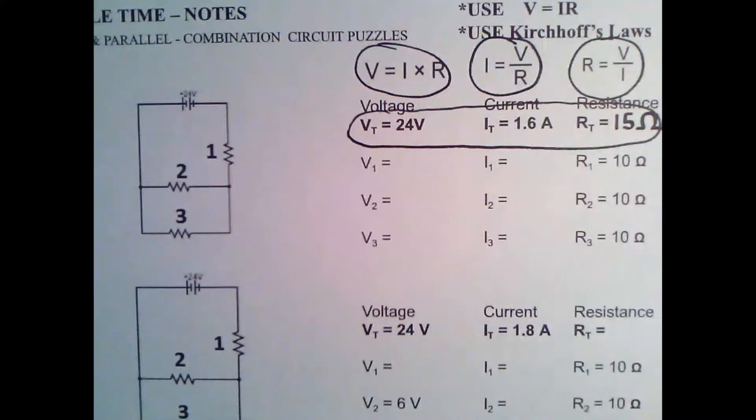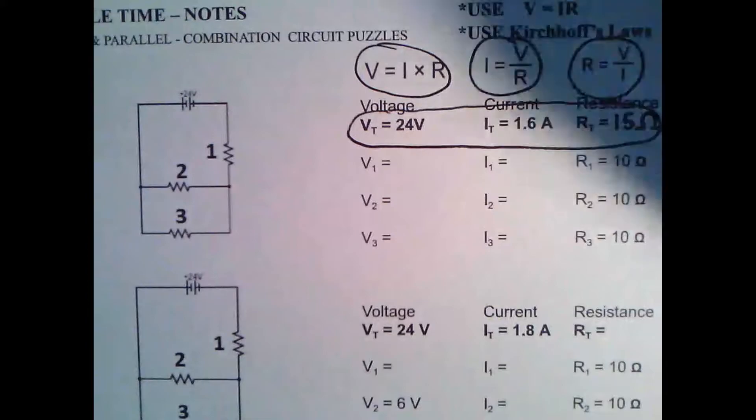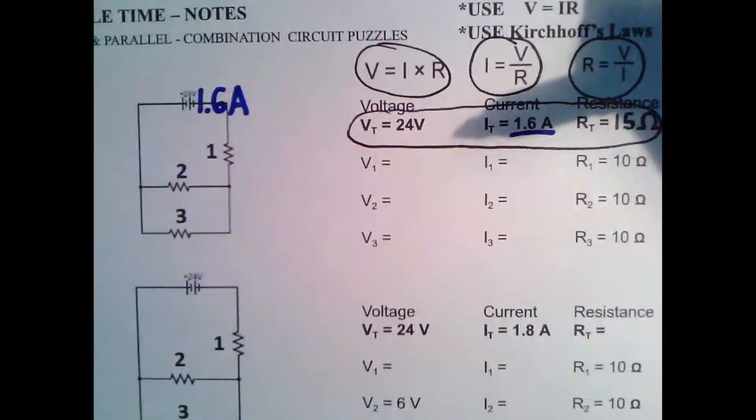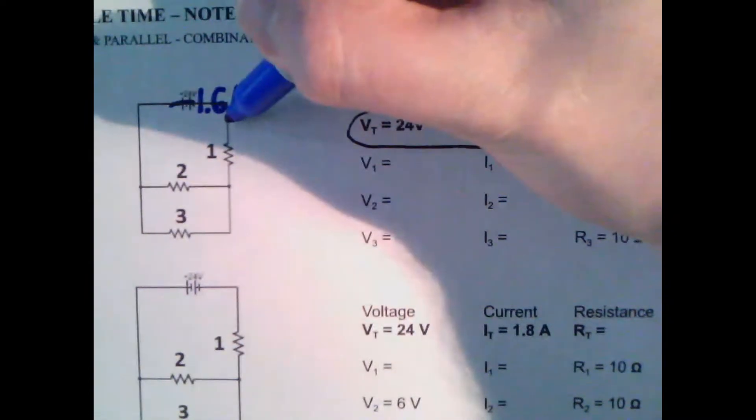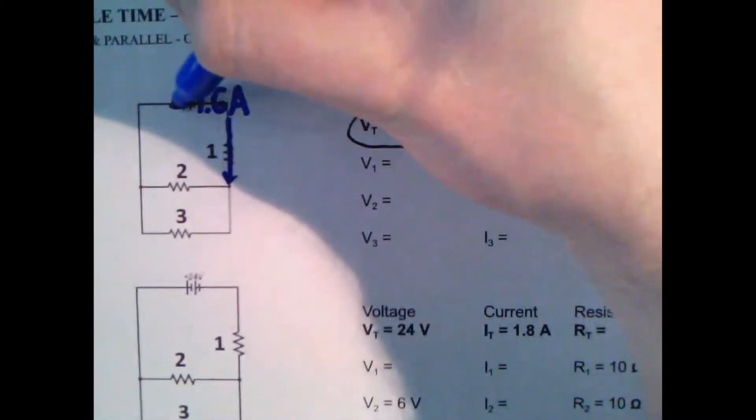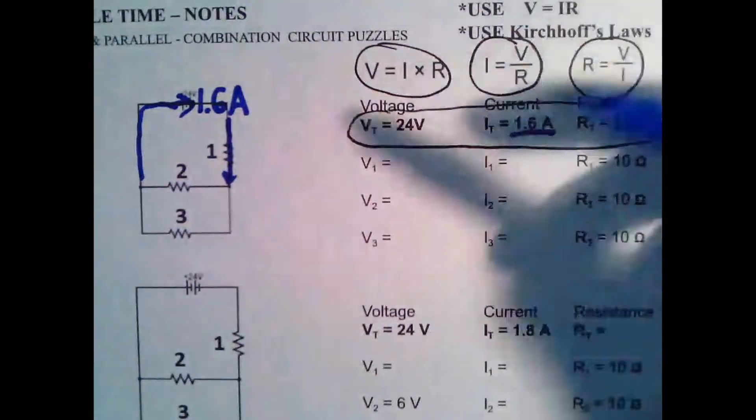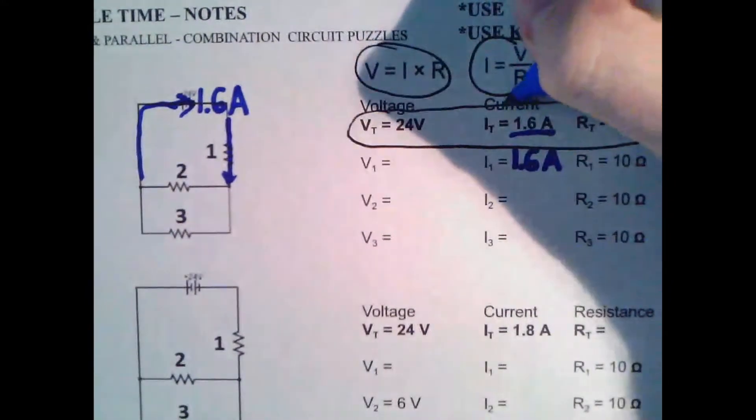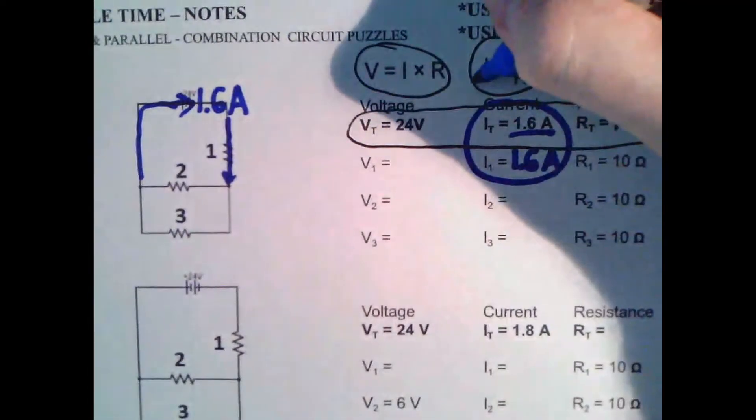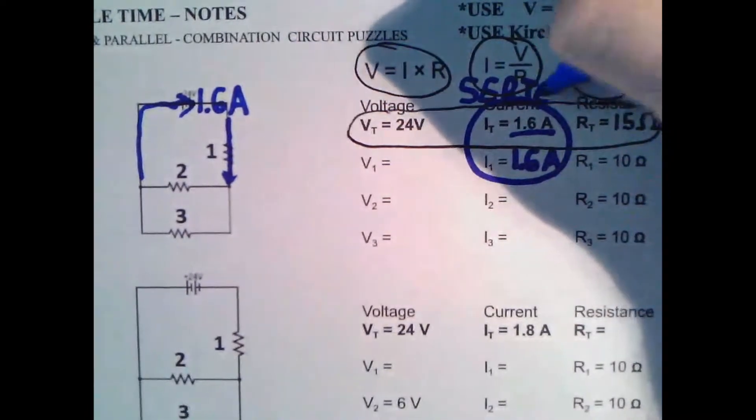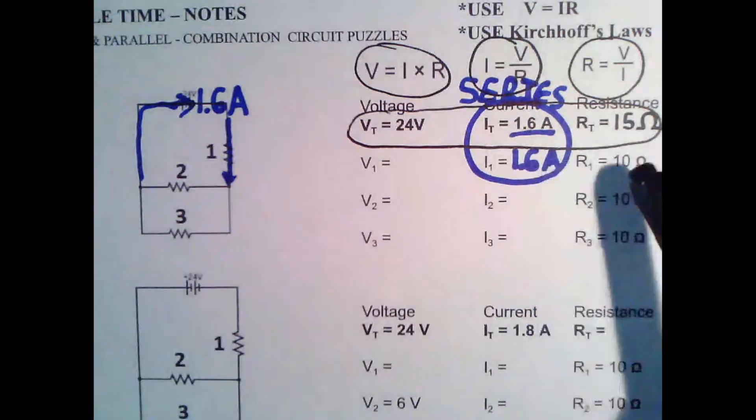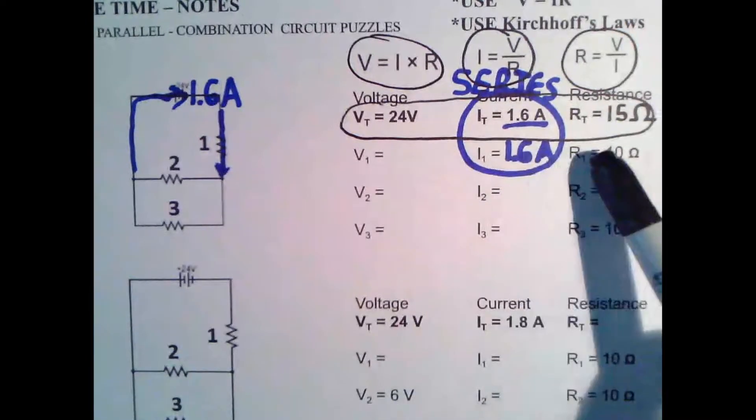So first what's good to know is that we know the current for the battery is 1.6 amps. That was told to us right here. So what's great about that is that we know that this is 1.6 amps. So we know that everything in this path is 1.6 amps, which means that the current going through resistor number one is also 1.6 amps because these are in series.